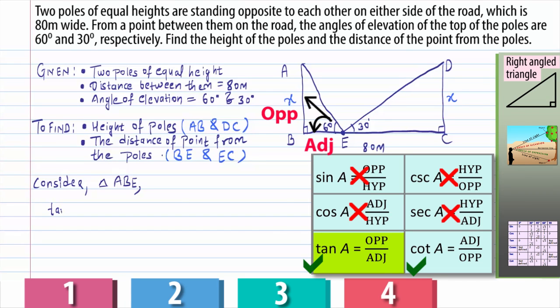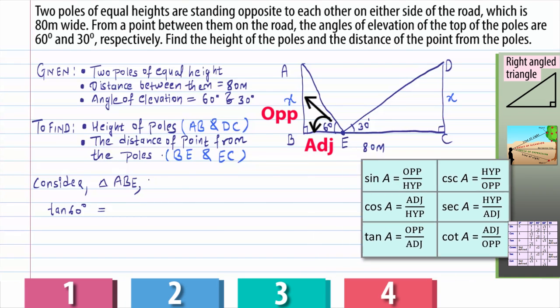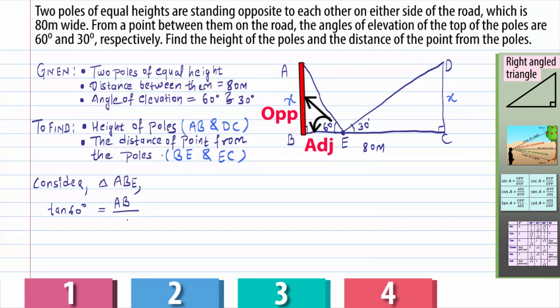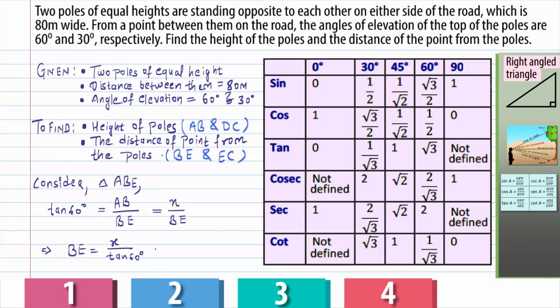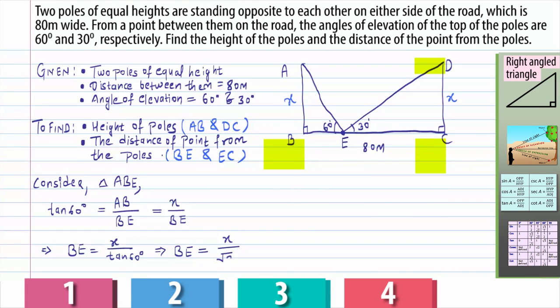So tan 60 degrees is equal to the ratio of opposite side to adjacent, and opposite side for 60 degrees angle is AB upon the adjacent side is BE. So on simplifying, we get value of BE as X upon tan 60 degrees. And by this table, the value of tan 60 is root 3. Therefore, the value of BE is equal to X upon root 3.